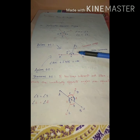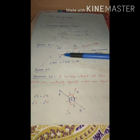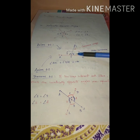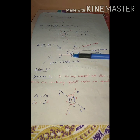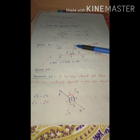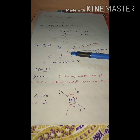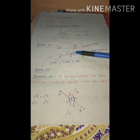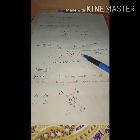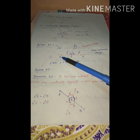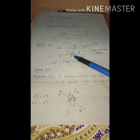Next is Axiom 6.2, using the same diagram. In this case, if the angle given is 180 degrees — meaning it is a straight angle — then if we draw a common arm, the sum of the two adjacent angles is 180 degrees. So Axiom 6.2 states: if the sum of two adjacent angles is 180 degrees, then the line AOB is a straight line. With respect to the non-common arms, we get a line that is always a straight line.